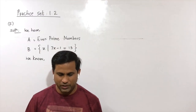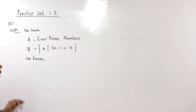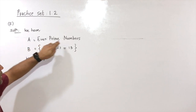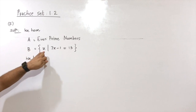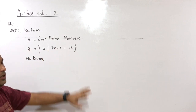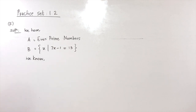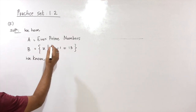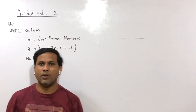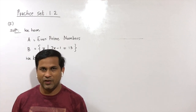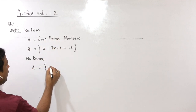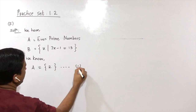Question number 2: decide whether set A and set B are equal with reason. Set A = {even prime numbers}, and set B = {X such that 7X − 1 = 13}. Both are in set builder form, so we convert to listing method. Set A: prime numbers are numbers divisible only by 1 and themselves. The only even prime number is 2, so set A = {2}. This is statement number 1.